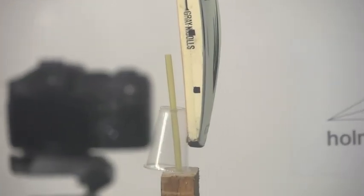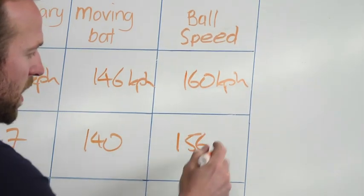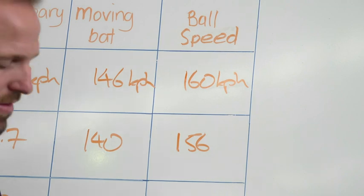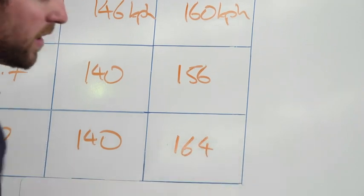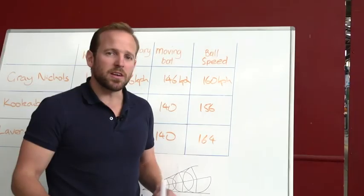The Kookaburra, well, the old technology just can't compete. 156, it's not going as far. The Laver and Wood though, 164. The clear winner - that is going to be one heck of a six.